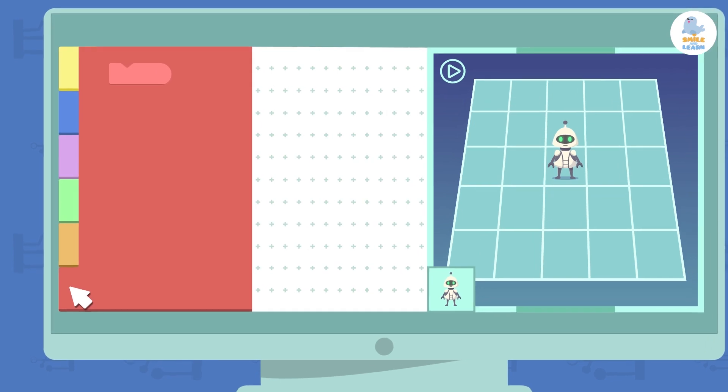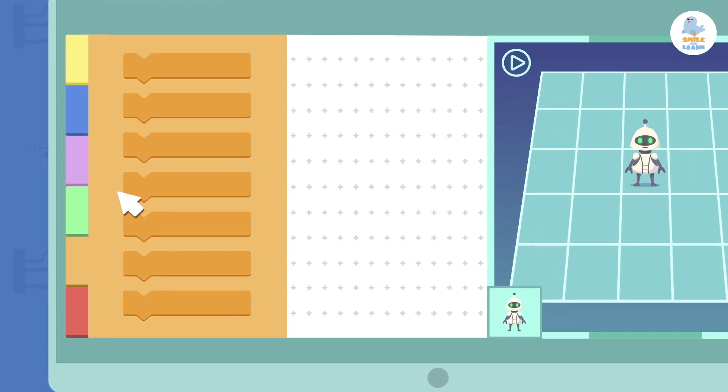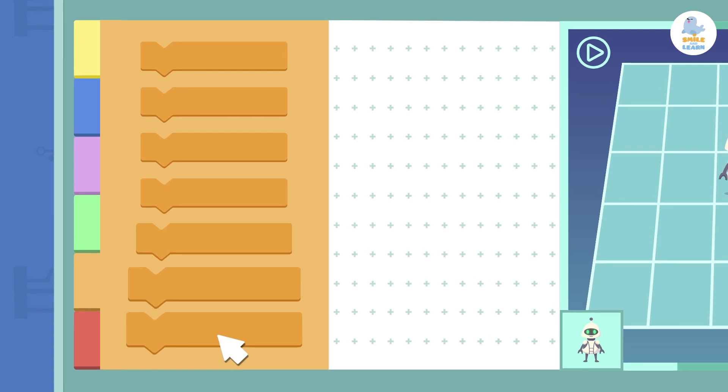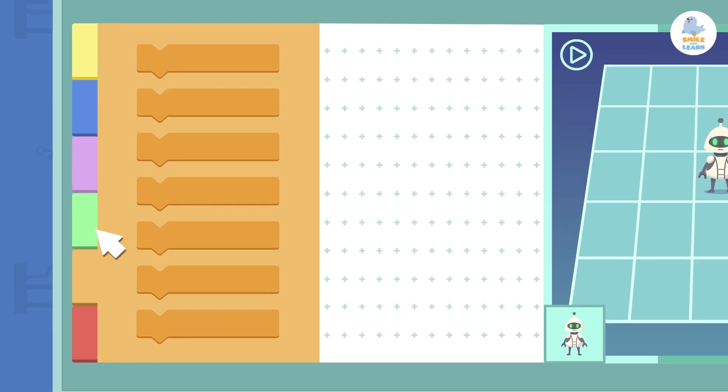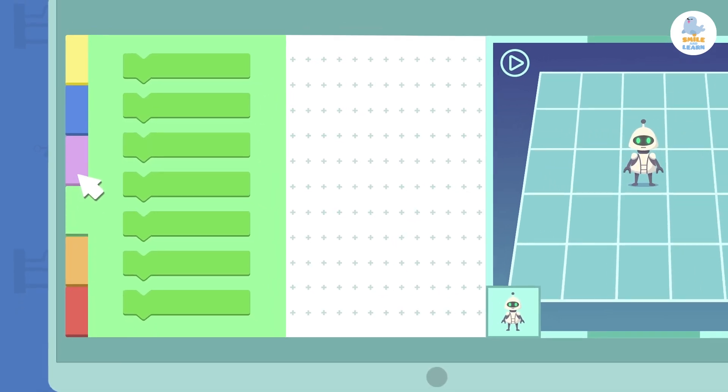There are different types of blocks and there are many different actions that you can choose from. On top of that, each block category has a different color to help you find them better.